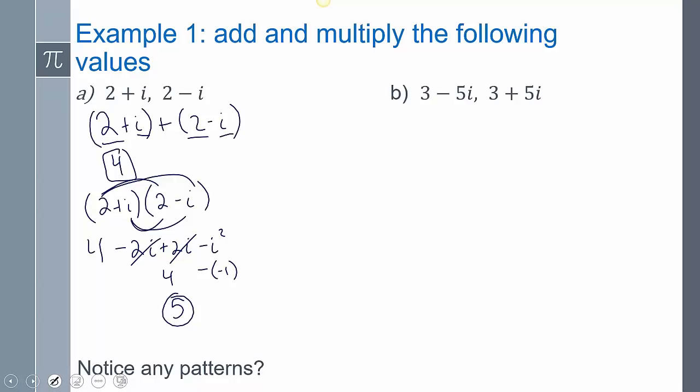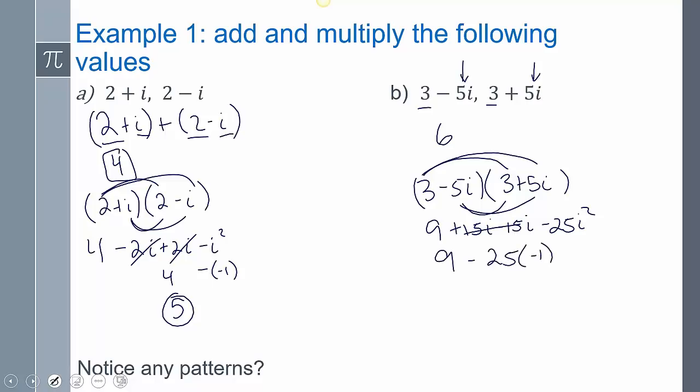Let's look at one more. If I add these together, 3 + 3 is 6, negative 5i + 5i, those cancel out. But now multiplying, 3 times 3 is 9, 15i, negative 15i, and minus 25i squared. Those cancel out, 9 minus 25i squared, and i squared is negative 1, so 9 + 25, that gives me 34.